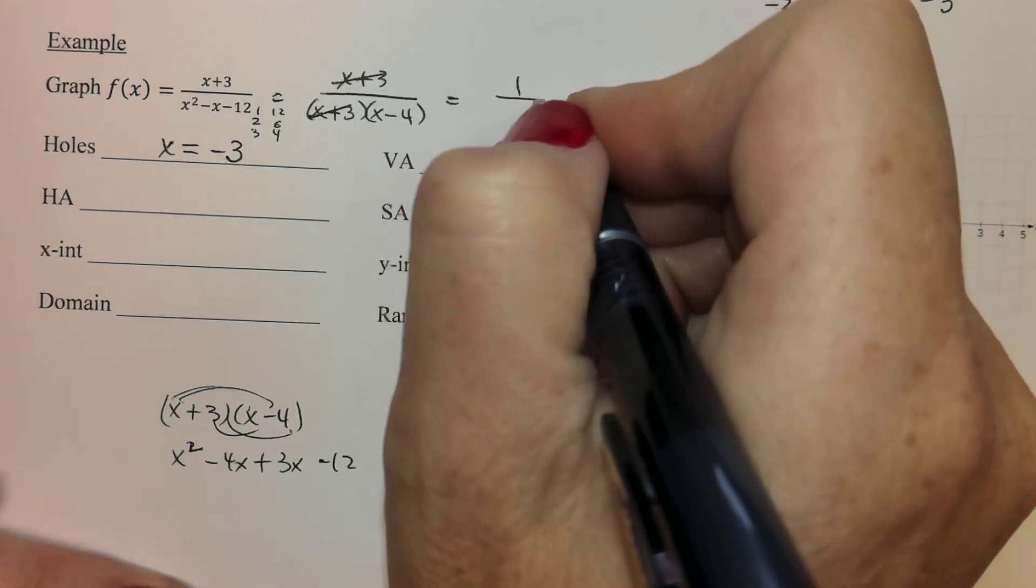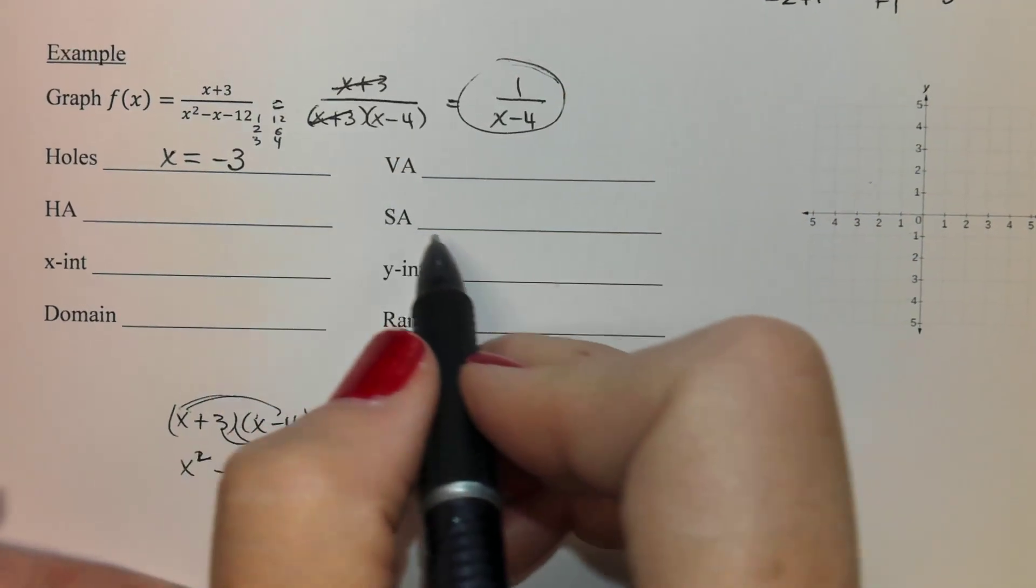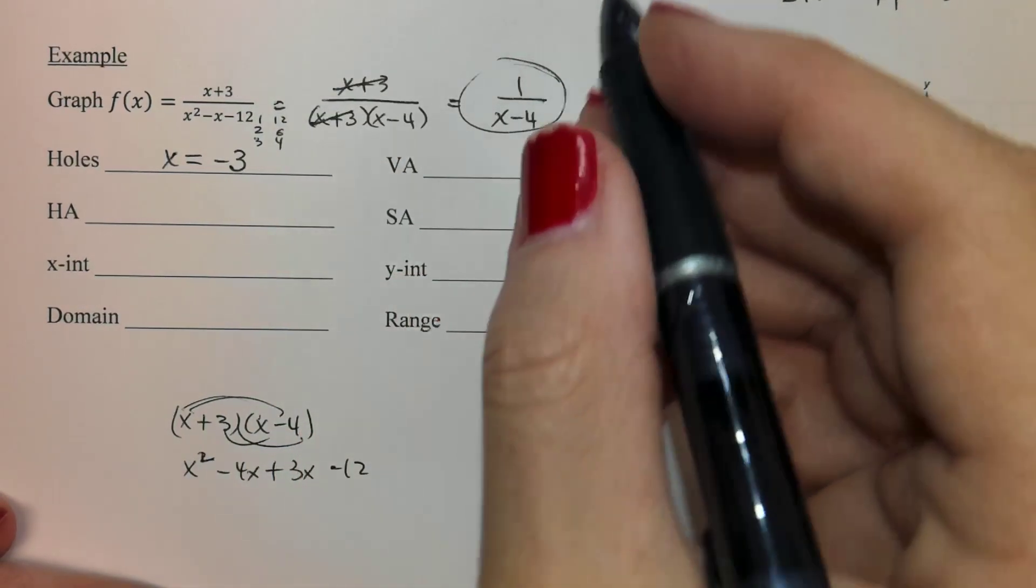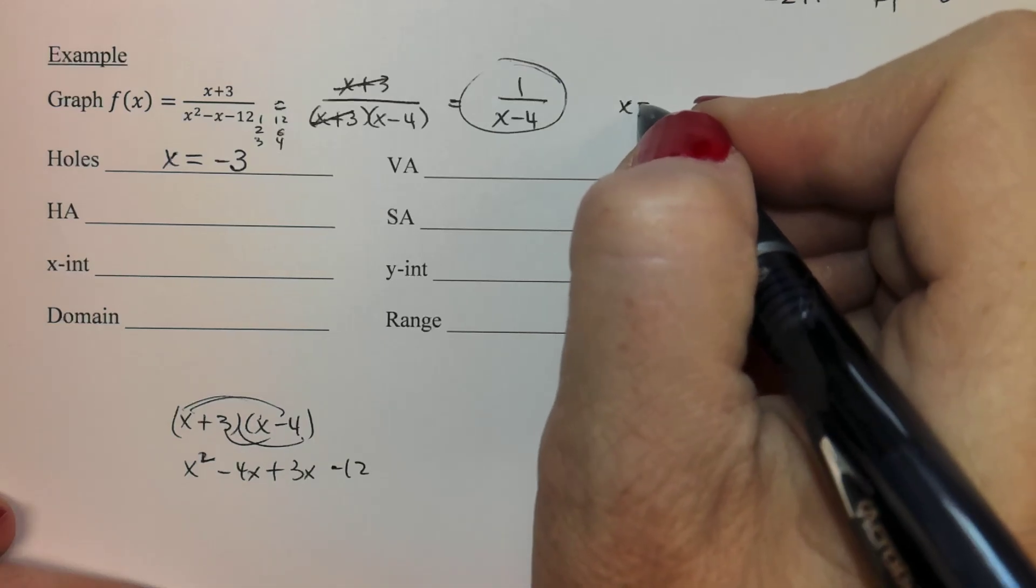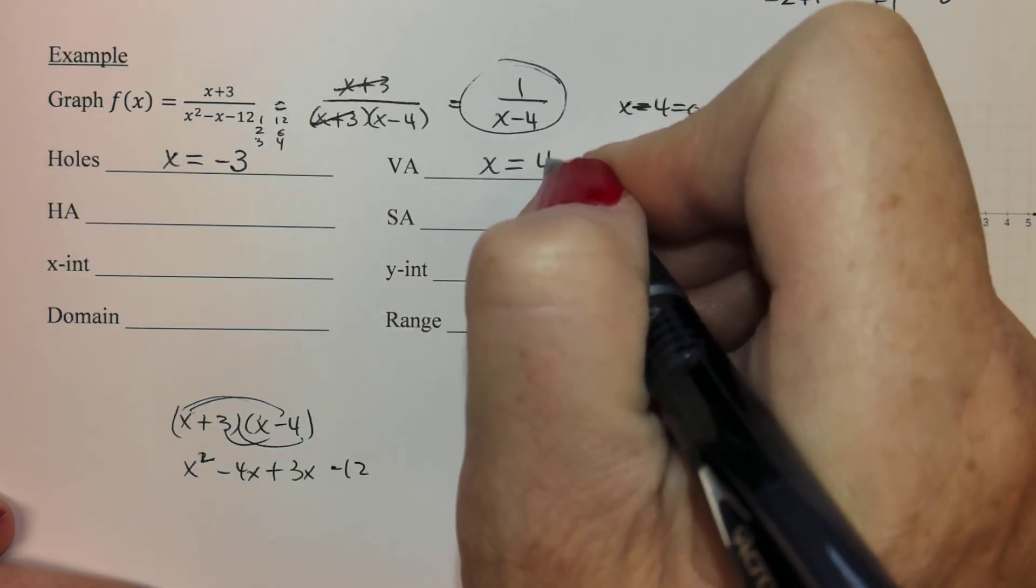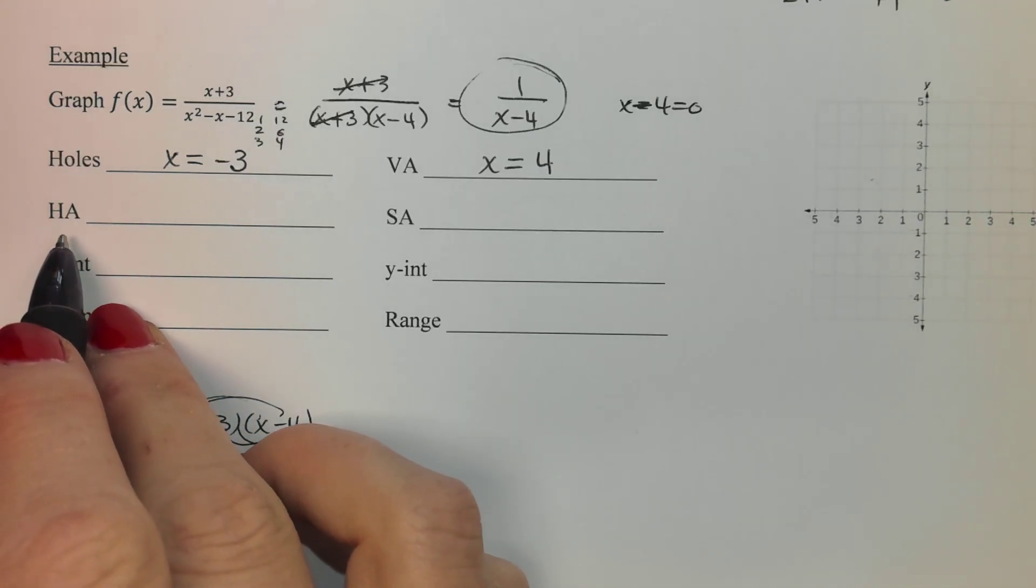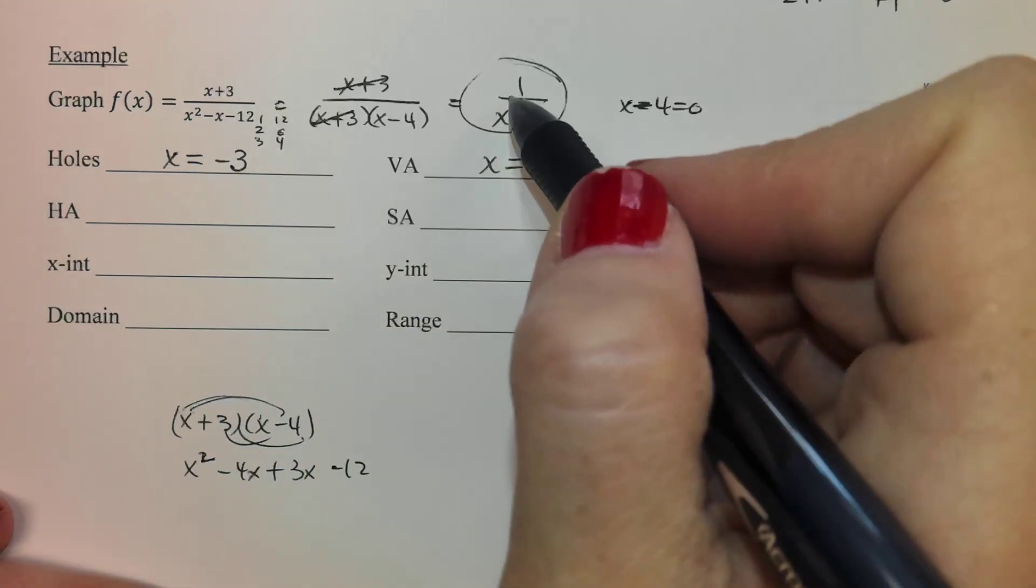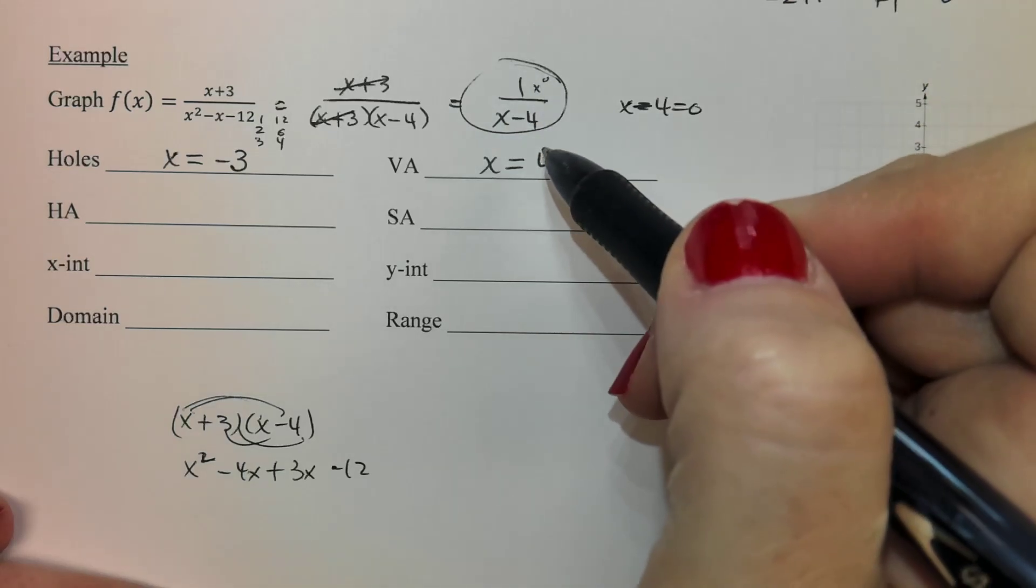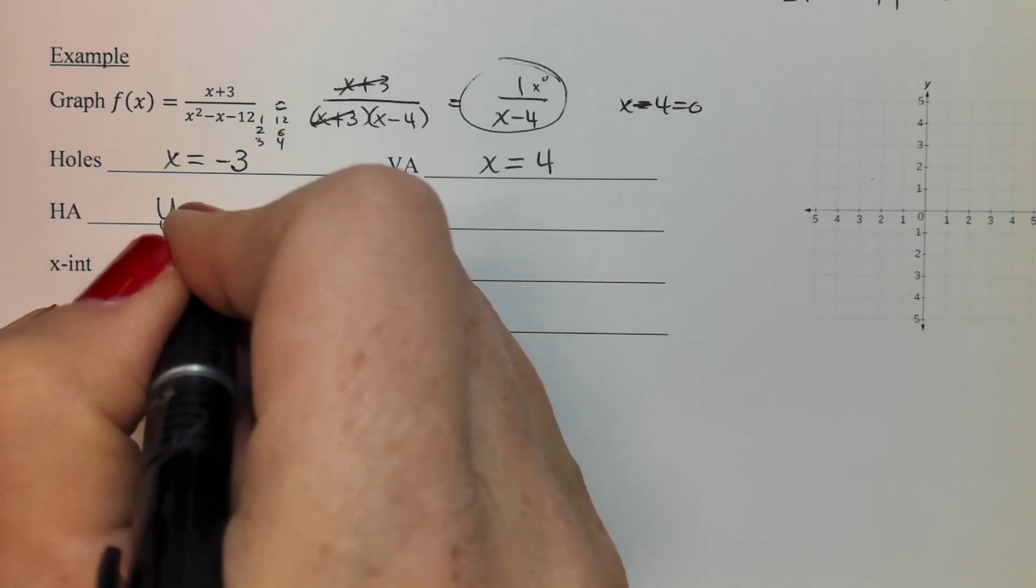VAs, remember once you factor and cancel, this is now what we're working with for the rest of the problem. We cannot come back here. So VAs are when the denominator equals zero. So I'm going to set that equal to zero. Minus four equals zero. So my vertical asymptote is x equals four. Horizontal asymptotes happen where the highest power is. And so up here you technically have an x to the zero. So the bottom wins. So that means your horizontal asymptote is at zero.